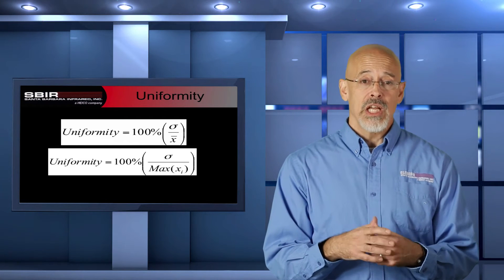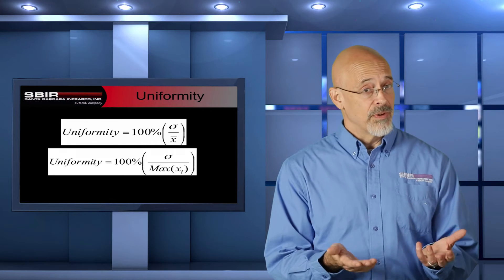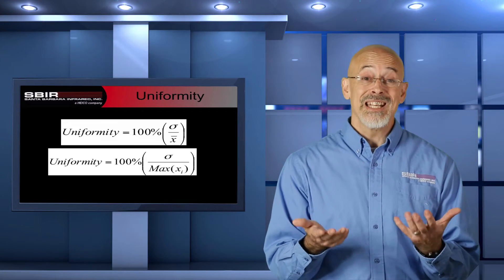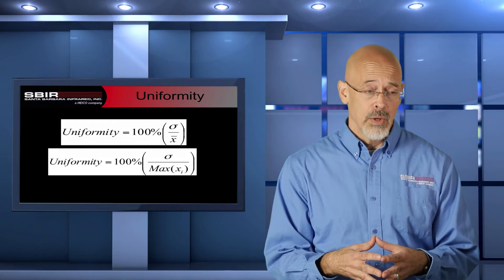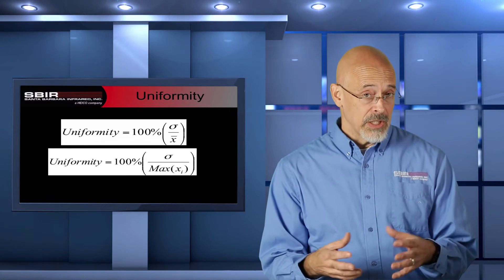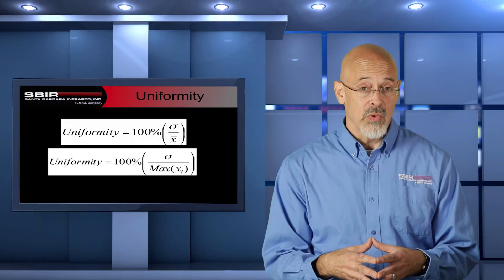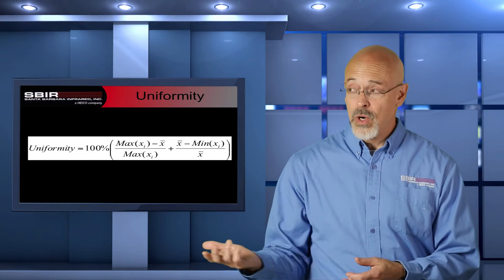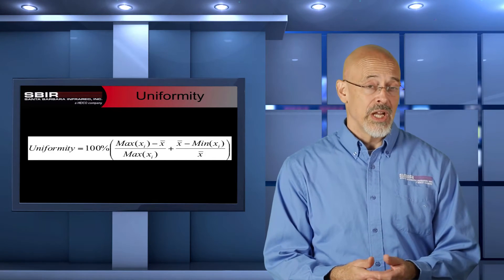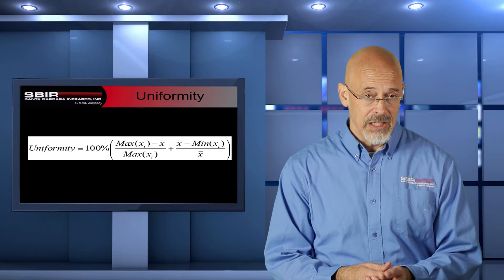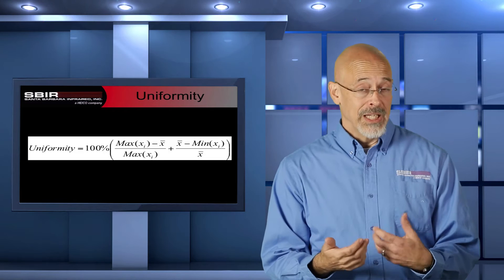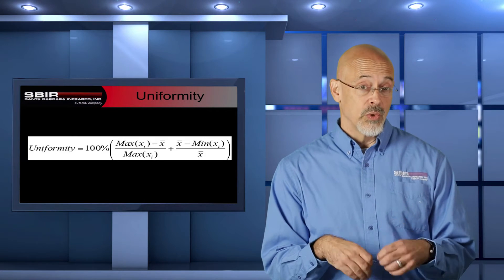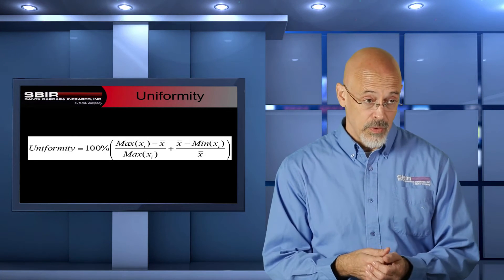On the other hand, we could take that standard deviation and compare it to the maximum value in the scene, which would also provide a uniformity measurement. There are other ways to set the denominator, and you'll get different values depending on what you're comparing it to. Additionally, the Night Vision Electronic Systems Directorate, NVESD, has a different way of calculating this — they refer to it as blur uniformity. It's a more complex formula that also assumes you've run a blur convolution on the image. So the formula used for uniformity isn't standardized, and there are different reasons for choosing the average versus the maximum value.